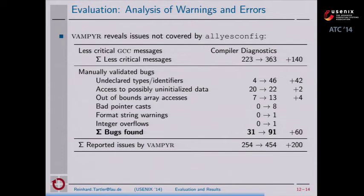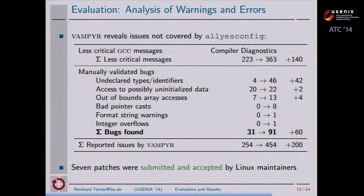In total, you can see the increase of compiler diagnostics compared to scanning only the all-yes config versus all configurations calculated by Vampir. Out of these 60 additional bugs we found, we prepared patches for seven of them, submitted them to upstream maintainers, and they have happily and thankfully acknowledged them.